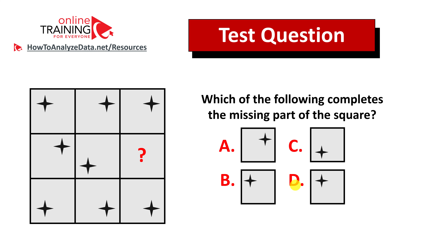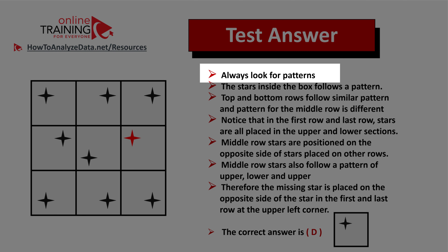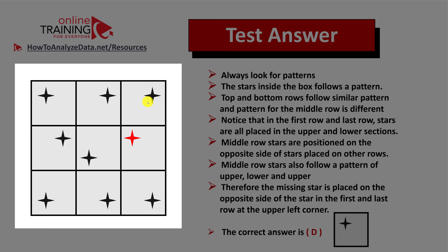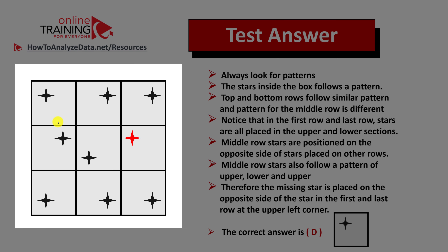Did you figure out the answer? Let's jump straight to the solution. Always look for patterns. The first pattern is that the top and bottom rows follow similar patterns — stars for the top row are at the top, and stars for the bottom row are at the bottom. The middle row follows a completely different pattern. The first middle-row star is at the top, then bottom, and the next would logically be at the top again. The middle-row stars are placed on the opposite side of the top and bottom row stars.